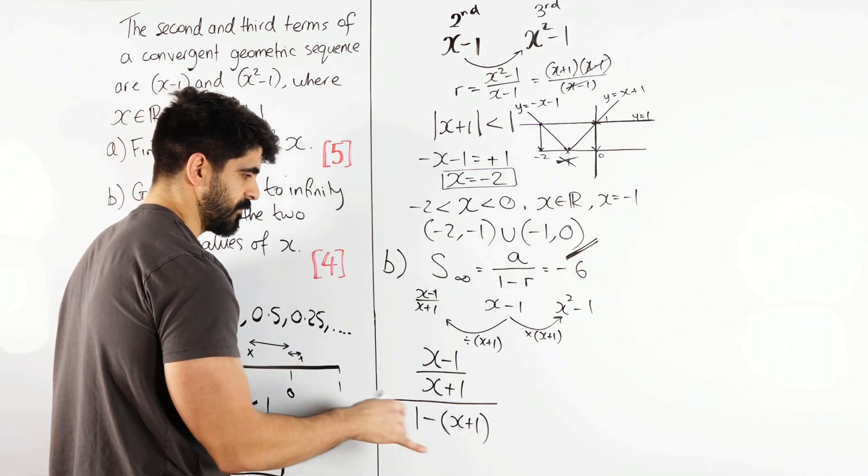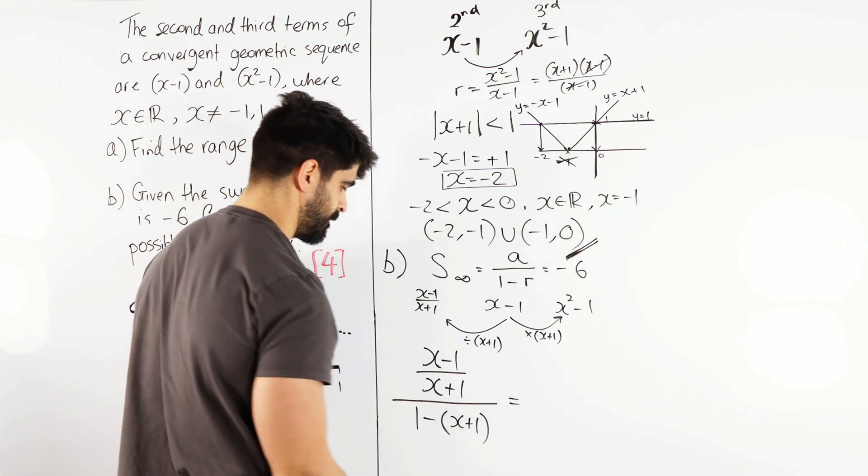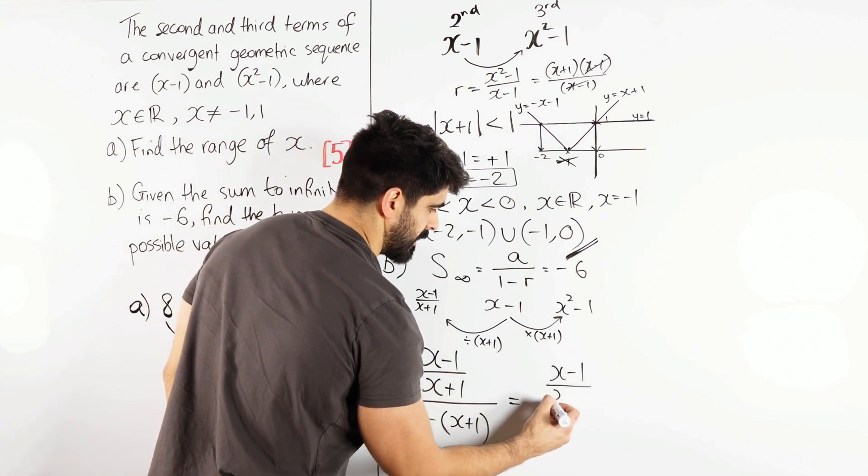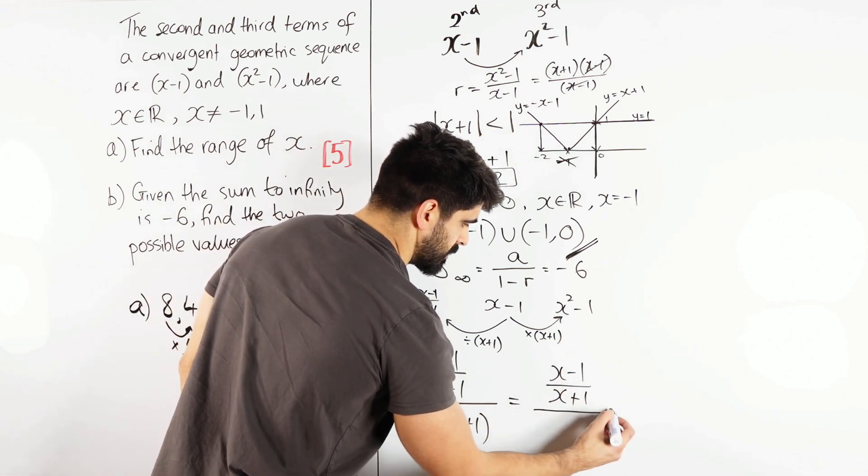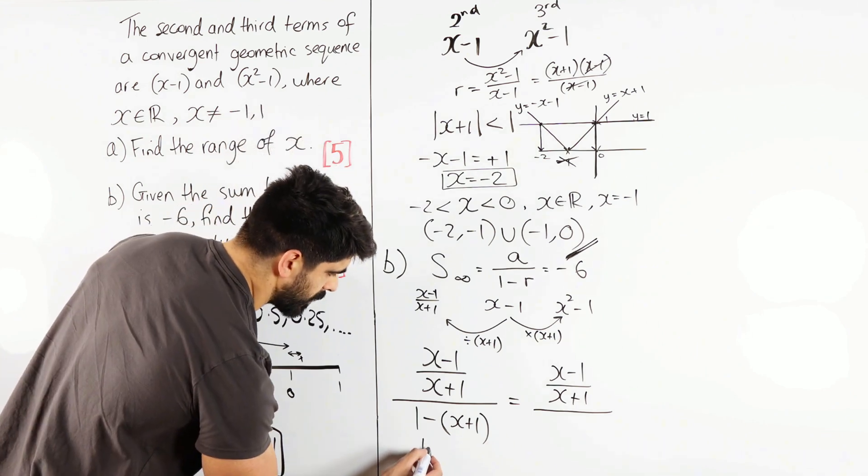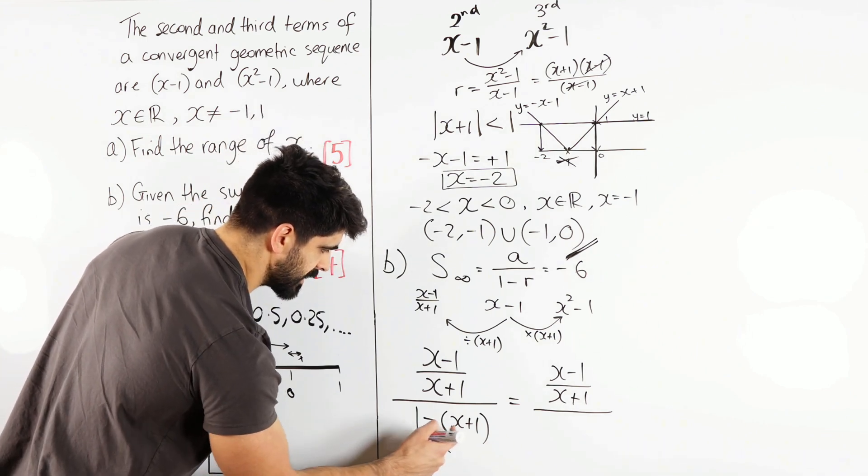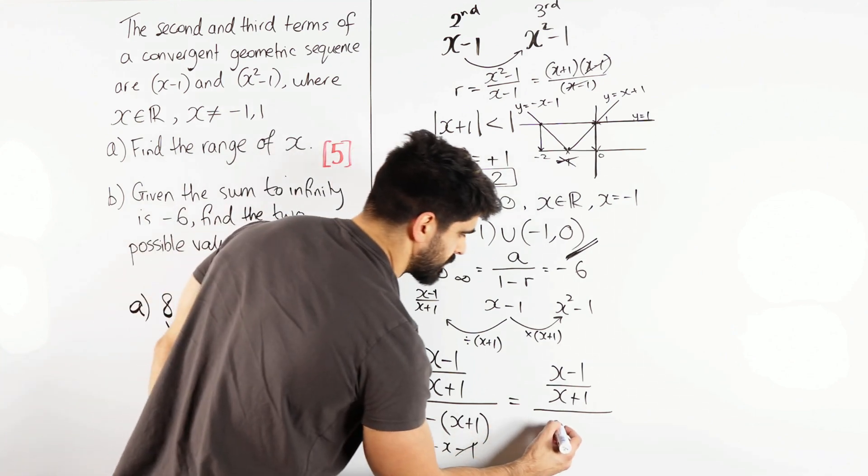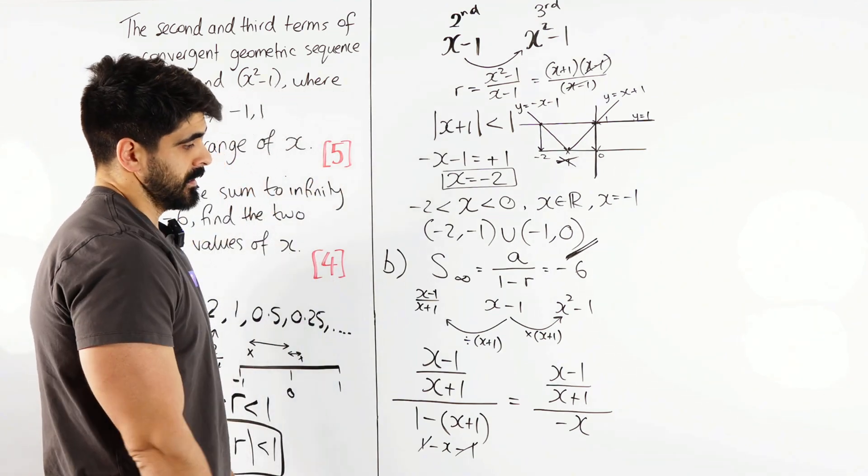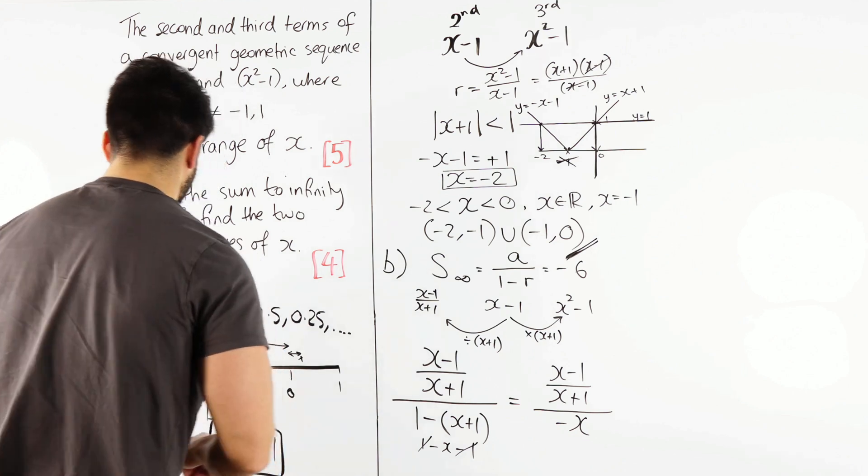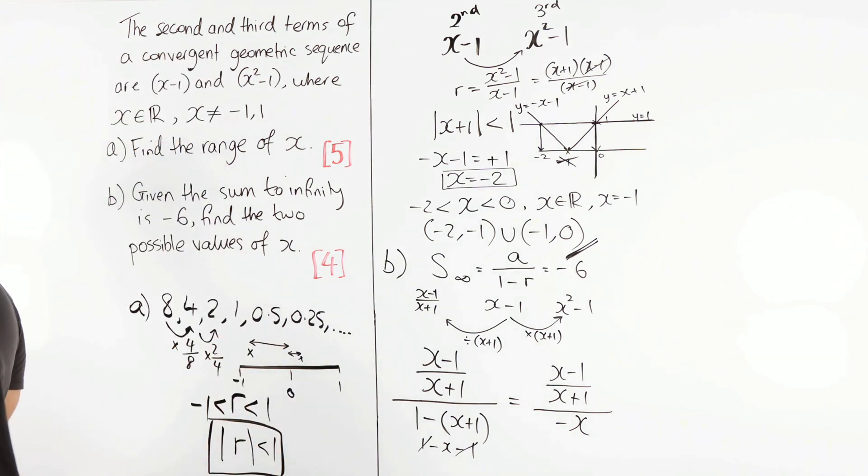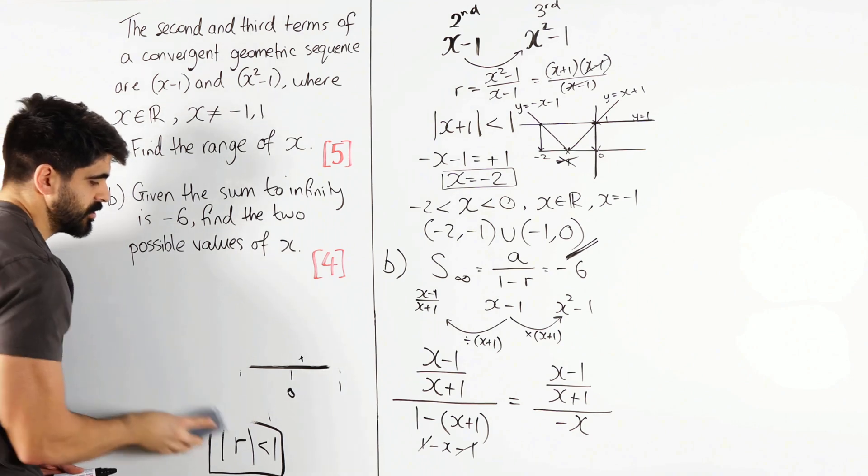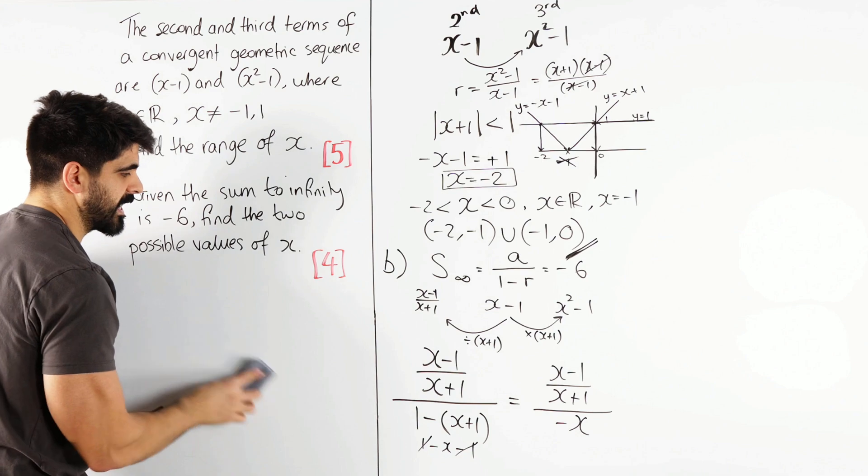Let's just clean this up first before we equate it to minus 6. So I get x minus 1 over x plus 1, all divided by, here I'm going to get 1 minus x, 1 minus x, then minus 1. So they cancel, we're just left with minus x. And then we can simplify that. I'm going to do that over here. Now it depends how you want to do this. I like to do this via the scaling method.